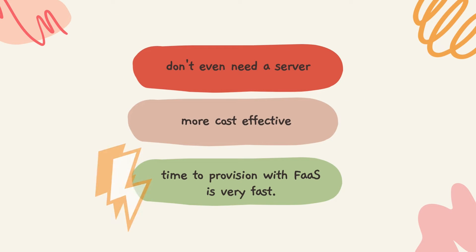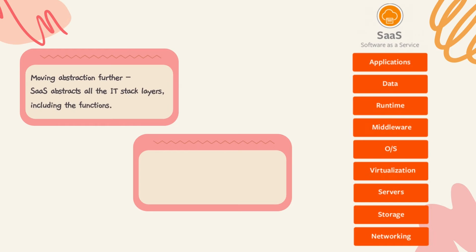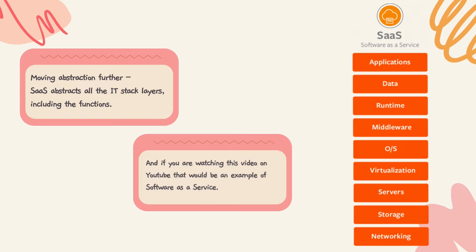Moving the abstraction layer further, SaaS abstracts all the IT stack layers including the functions, or Function as a Service. And if you are watching this video on YouTube, that would be an example of Software as a Service.